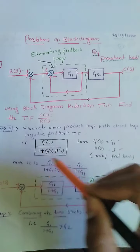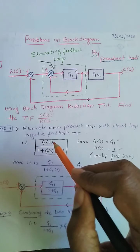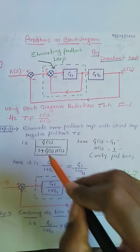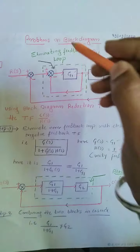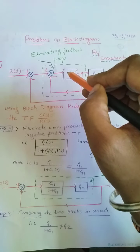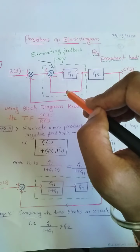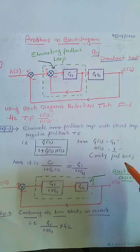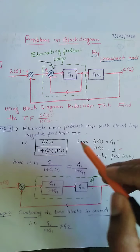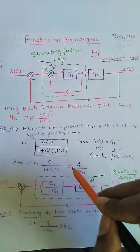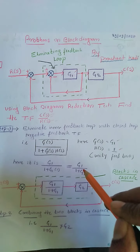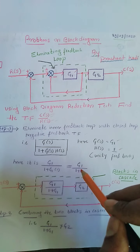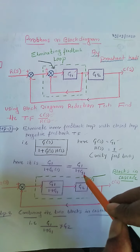The closed loop transfer function is G(s) divided by 1 plus G(s)·H(s). Here G(s) is G1 and H(s) is 1, as it is a unity feedback system. After substituting the values of G(s) and H(s), the loop transfer function reduces to G1 divided by 1 plus G1.